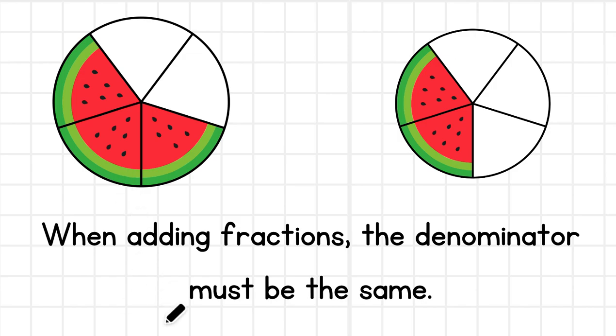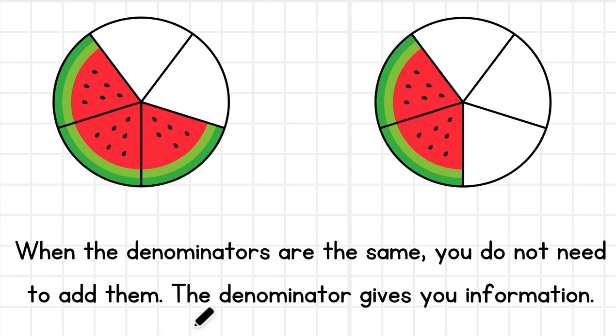So just to remind you, when adding fractions, the denominator must be the same. When the denominators are the same, you do not need to add them. For example, three fifths plus two fifths—you don't need to add those denominators. They're just for informational purposes only. But you do need to add the numerators, which equals one whole.